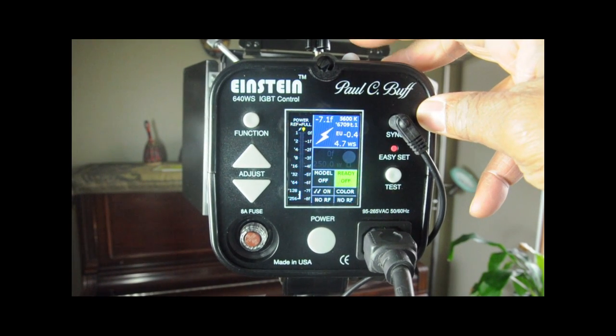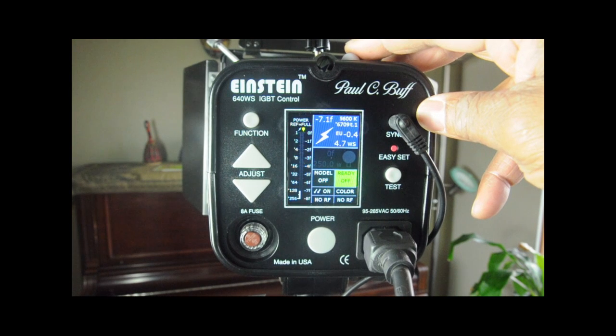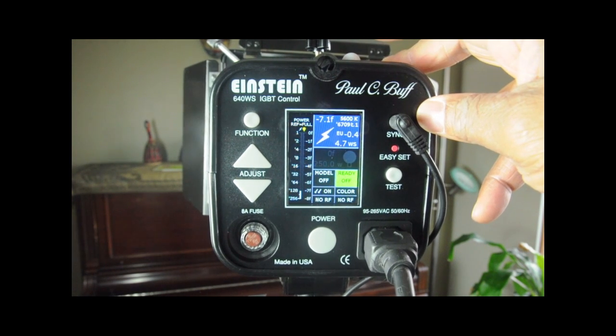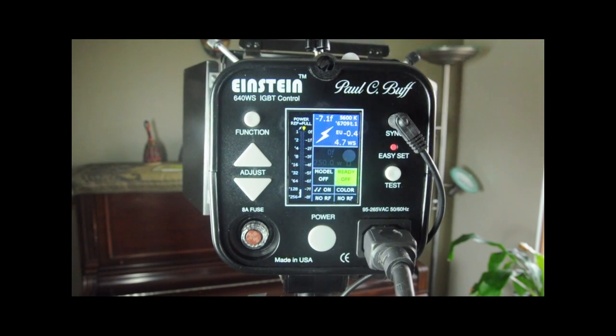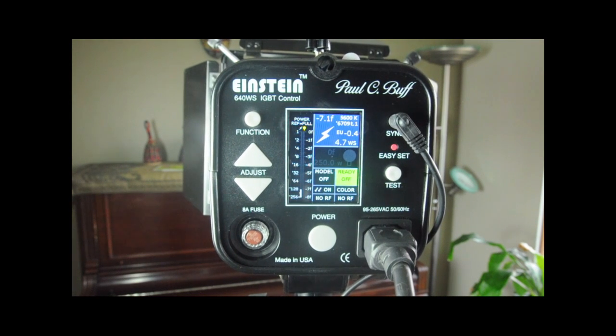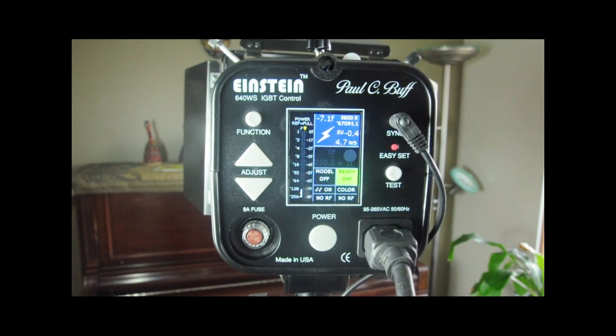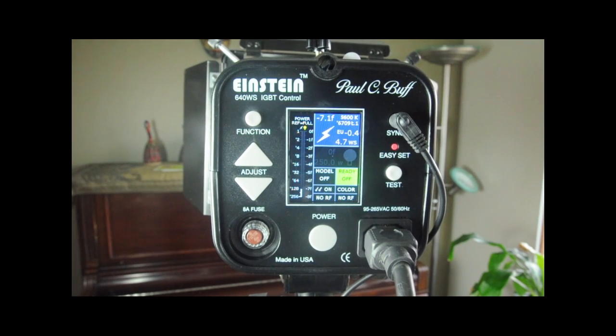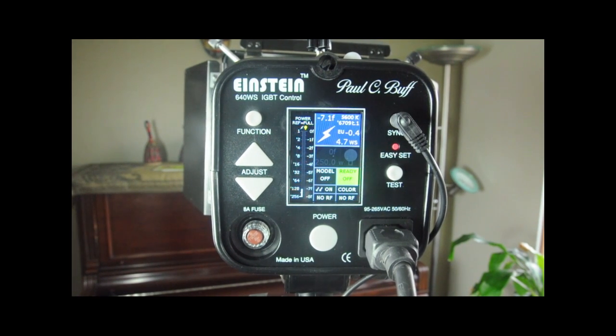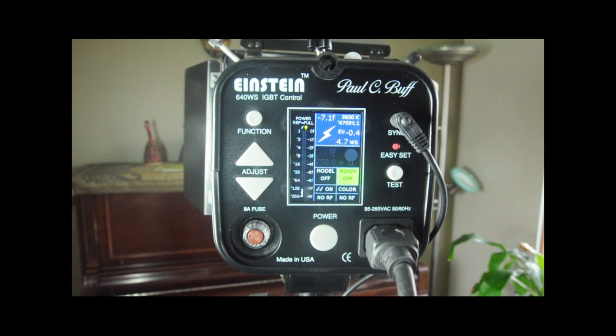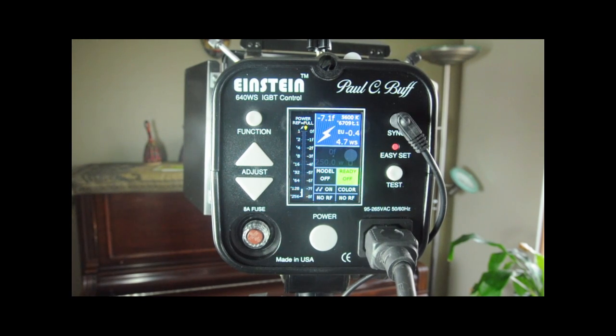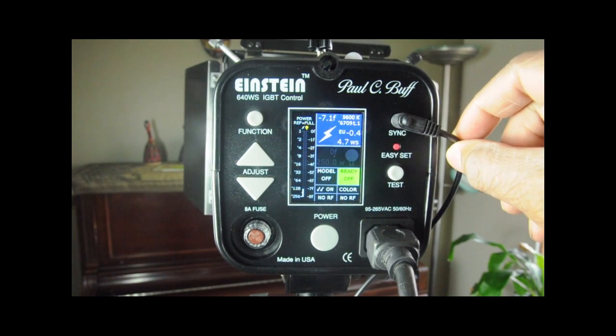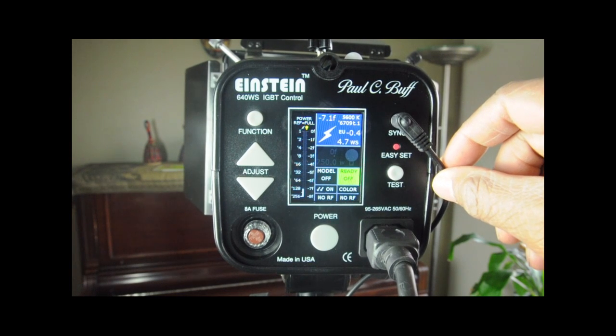Let's zoom out here. Right here on top we've got a photo eye for turning this unit into a slave. What that means is that if you have another flash connected to your camera, when that goes off, the slave unit will also go off and you'll get both strobes firing at once. Personally, it's nice to have in a pinch, but there are many more reliable ways of triggering your strobe.